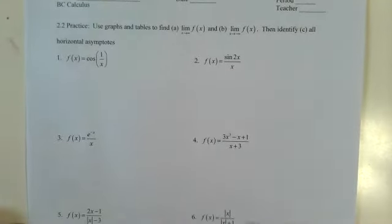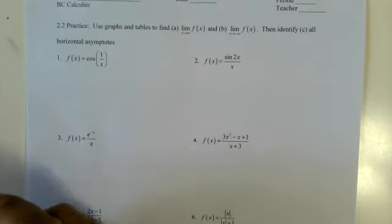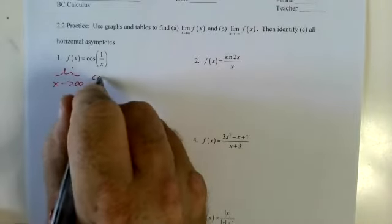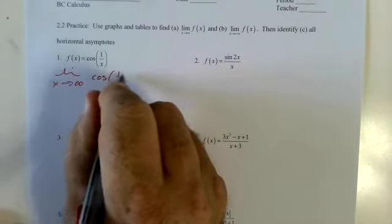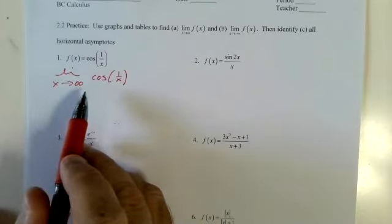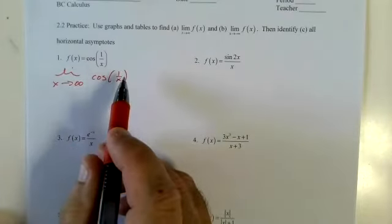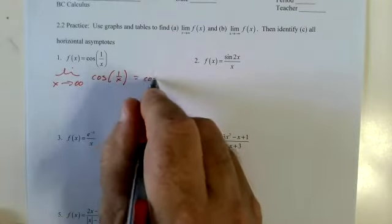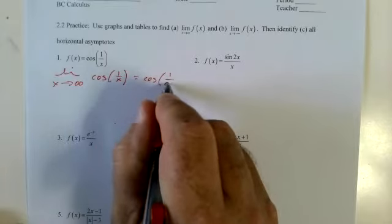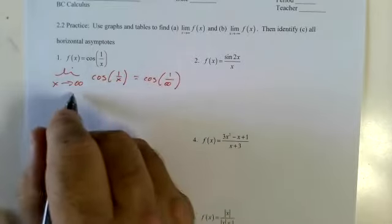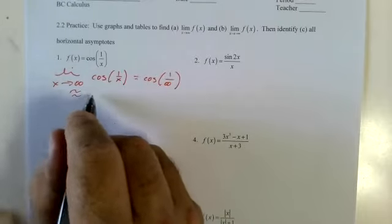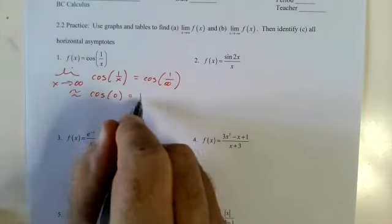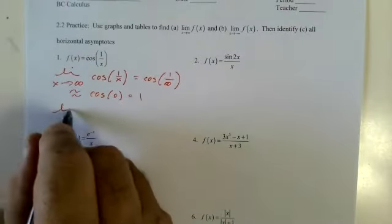So, horizontal asymptotes — we want the limit as x approaches infinity of cosine of 1 over x. I can rewrite this as the limit as x approaches 0 of cosine of x. When I plug in, 1 over infinity is basically zero, so cosine of zero, which is one.